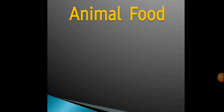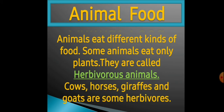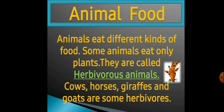Our next topic is animal food. Jaise ke hum bhi food khaate hain, waise animal bhi food khaate hain. Jaise haara food different different hota hai — koi veg khaata hai, koi non-veg khaata hai — waise animal mein bhi different different type ke food khate hain. Animals eat different kinds of food. Some animals eat only plants. They are called herbivores. Cows, horses, giraffes and goats are herbivores — woh sirf plant khaate hain, other animal ka meat nahi khaate.